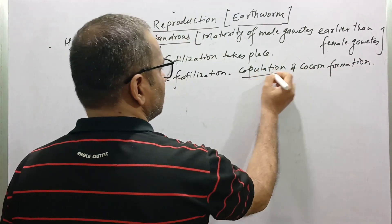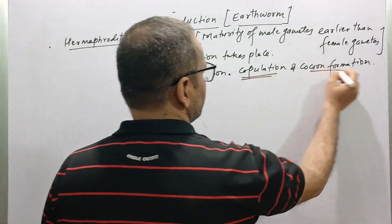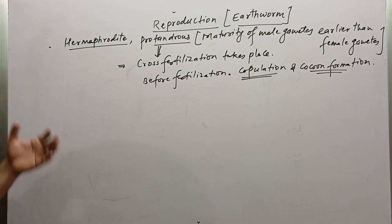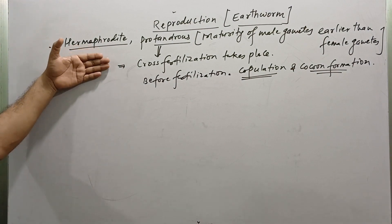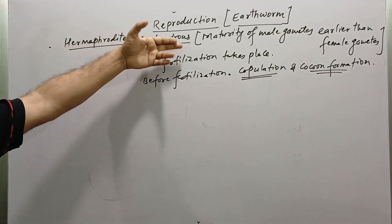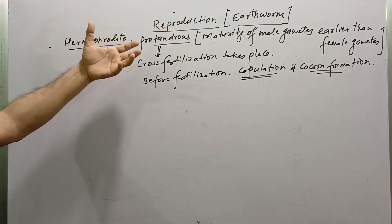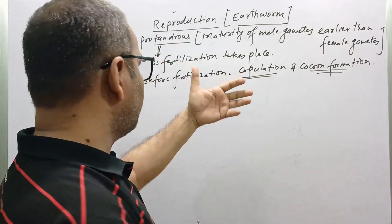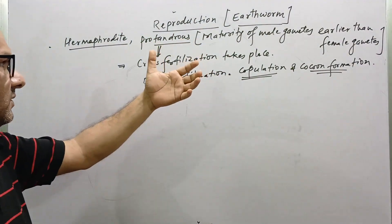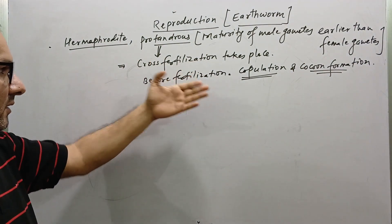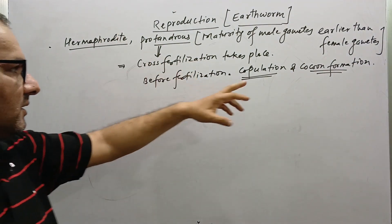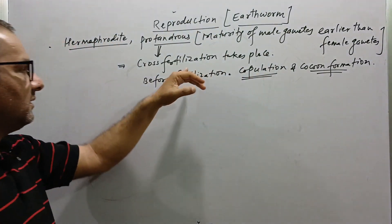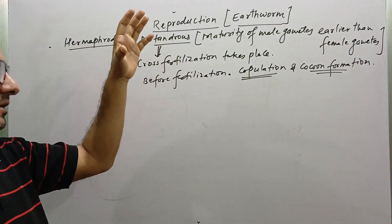Copulation and cocoon formation take place before fertilization. These two are the processes which take place before fertilization. Earthworms are hermaphrodite, they are protandrous, and they reproduce sexually — asexual reproduction is absent in them. During sexual reproduction, the first process is copulation, then cocoon formation, after that fertilization, and then development.